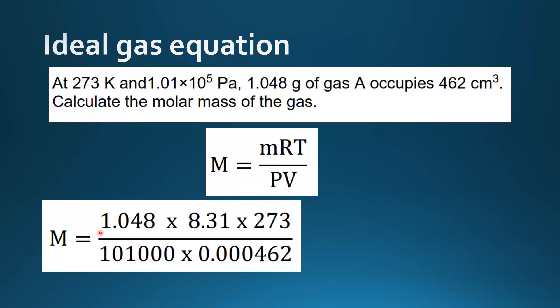Next we'll input the values into the equation. We start with M, which is mass of the gas, which is 1.048 grams. And then R is 8.31. And then T is the temperature in kelvin, which is 273.